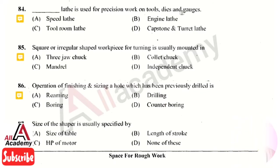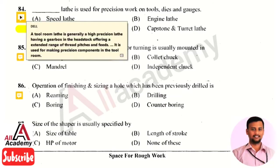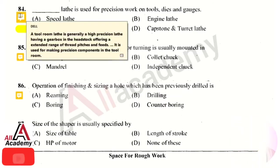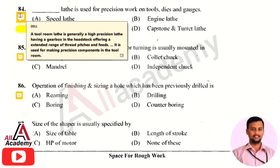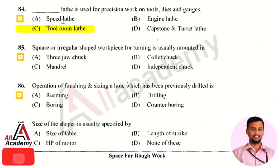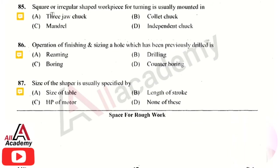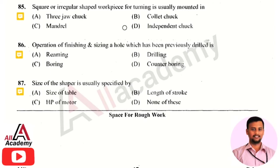The right answer is option 3, that is tool room lathe. A tool room lathe is generally a high-precision lathe having a gearbox in the headstock, offering an extended range of thread pitches and feeds. It is used for making precision components in a tool room, which is why it is known as a tool room lathe.